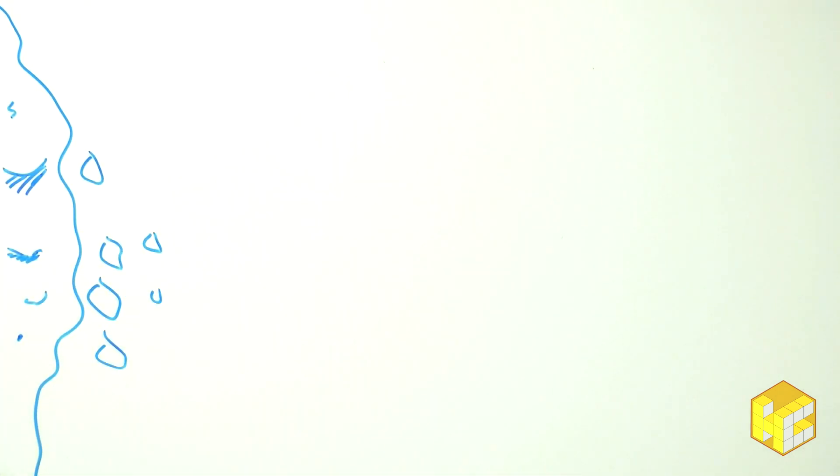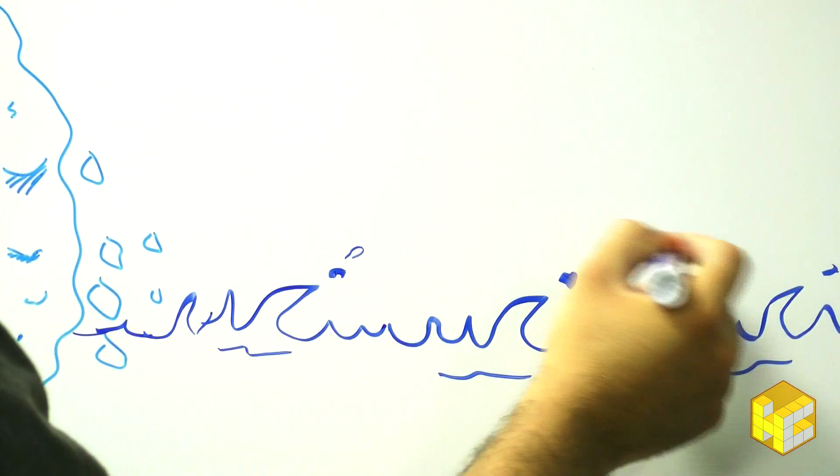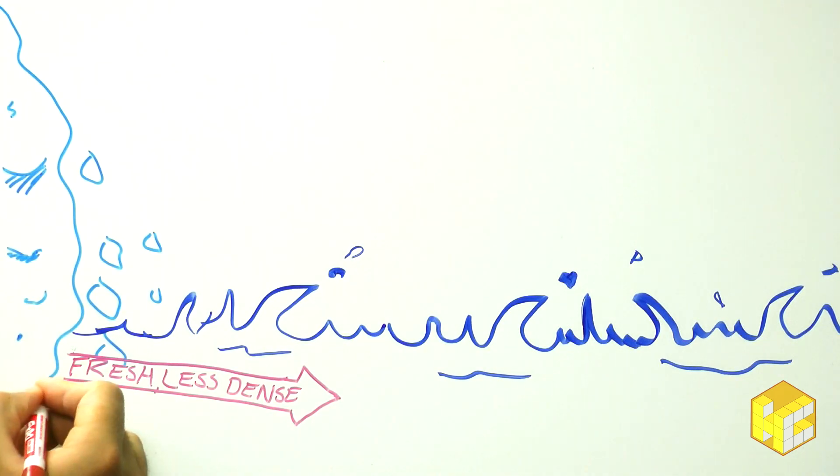However, when glaciers melt, a lot of fresh, cold water is introduced to the surface. Because this water is not salty, and therefore less dense, it remains at the surface and disrupts the regular flow.